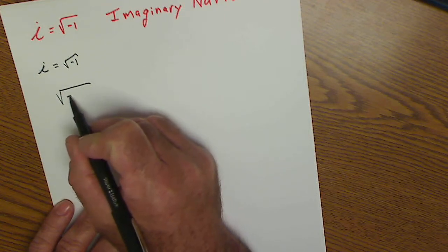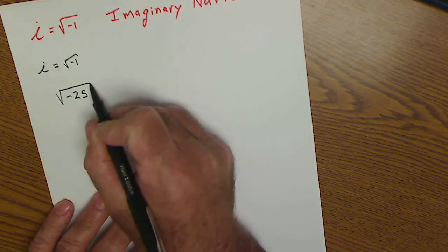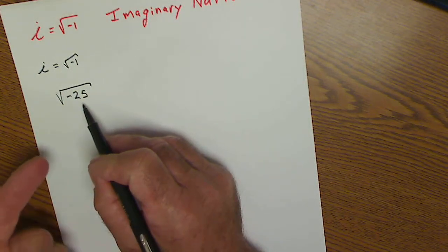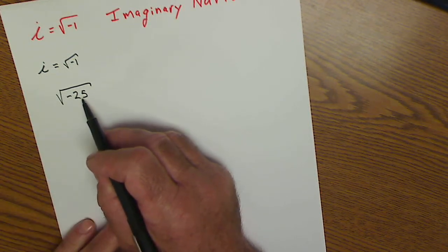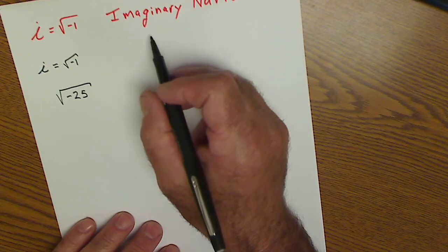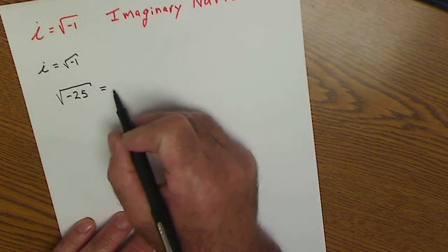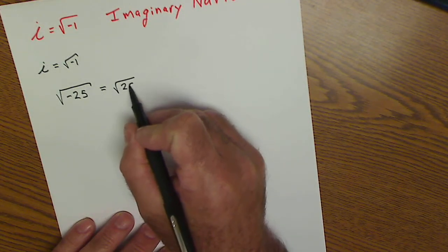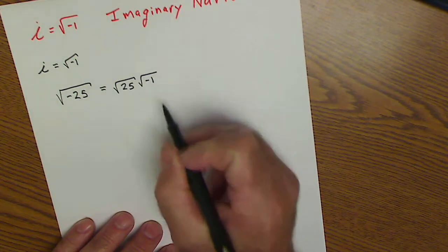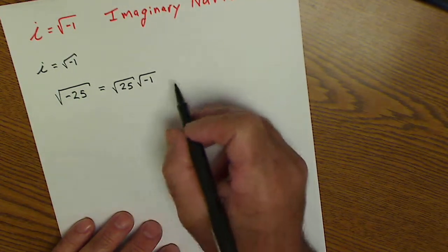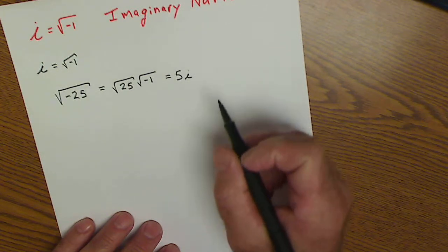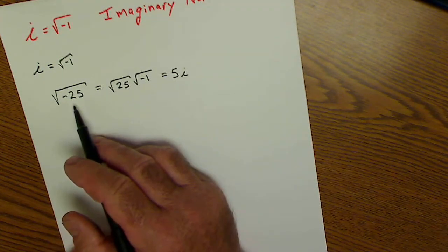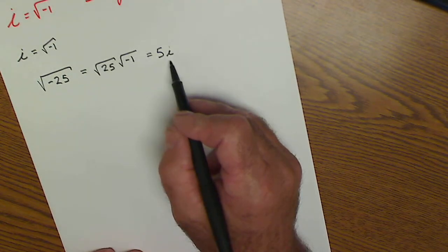So let's say if I had negative square root of 25, before we just put that as the empty set, but it actually does have a solution. It's just an imaginary solution. So square root of negative 25 is the square root of 25 times the square root of negative 1. Square root of 25 is equal to 5, and square root of negative 1 is i. So you could simplify the radical by using that i.